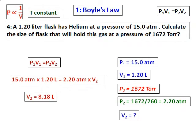This is in accordance with Boyle's law: the pressure decreased from 15.0 to 2.2 atmospheres, and hence the volume increased from 1.20 to 8.18 litres.